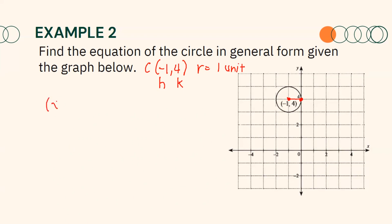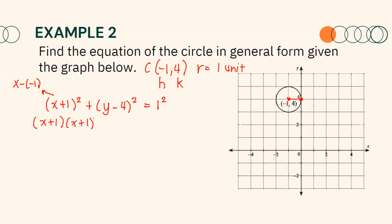Substituting into our standard form, we get (X plus 1) squared because H equals negative 1, making it X minus negative 1, which becomes X plus 1. So we have (X plus 1) squared plus (Y minus 4) squared equals 1 squared. Expanding: (X plus 1) times (X plus 1) and (Y minus 4) times (Y minus 4), with 1 squared equal to 1.